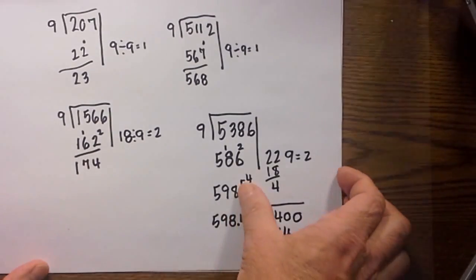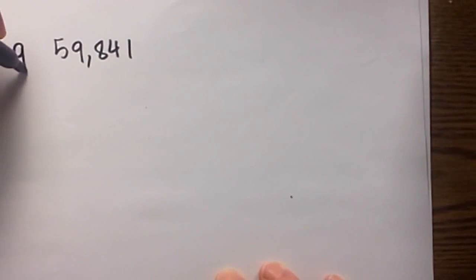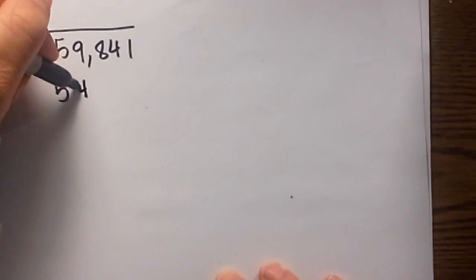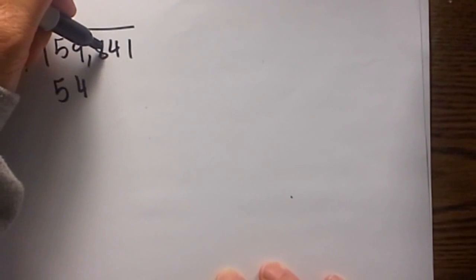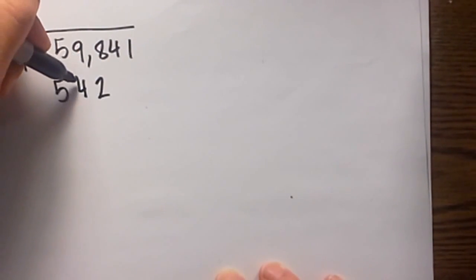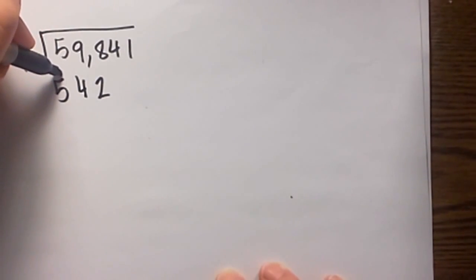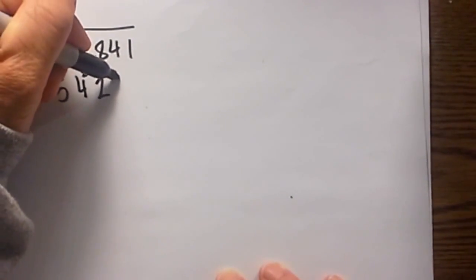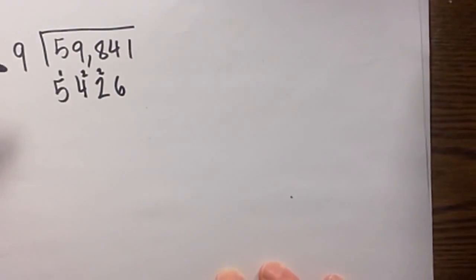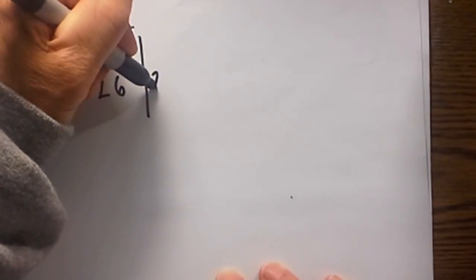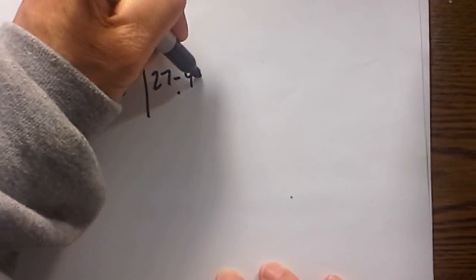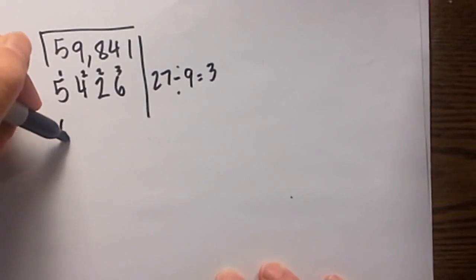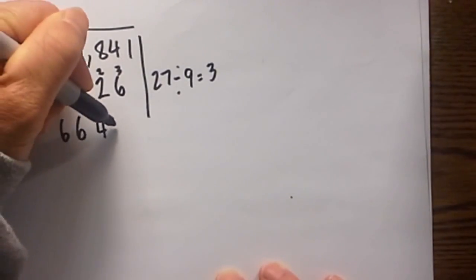Two more examples. We have 59,841 divided by 9. Bring the 5 down, 5 plus 9 is 14. 14 plus 8 is 22. Since we have 14 you must place the 1 here. 22, I will place the 2 here. 22 plus 4 is 26, place a 2 here. 26, draw the line. 26 plus 1 is 27. 27 divided by 9 equals 3. Place a 3 over here, so we have 6,649.